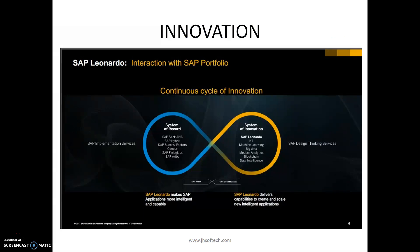SAP Leonardo is always a continuous innovation process through interaction with the SAP portfolio. For SAP implementation services, the system of records includes SAP S/4HANA, SAP Hybris, SAP SuccessFactors, SAP Concur, SAP Fieldglass, and SAP Ariba. On the innovation side, the systems of innovation include SAP Leonardo Internet of Things, machine learning, big data, modern analytics, blockchain, and data intelligence — areas where continuous innovation is expected to change the way enterprises operate.